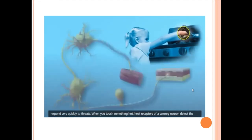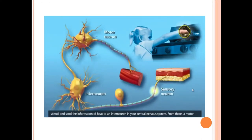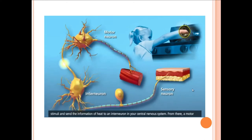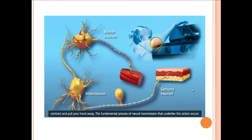When you touch something hot, heat receptors of a sensory neuron detect the stimuli and send the information of heat to an interneuron in your central nervous system. From there, a motor neuron sends a response from your central nervous system to the skeletal muscles in your arm, causing them to contract and pull your hand away.